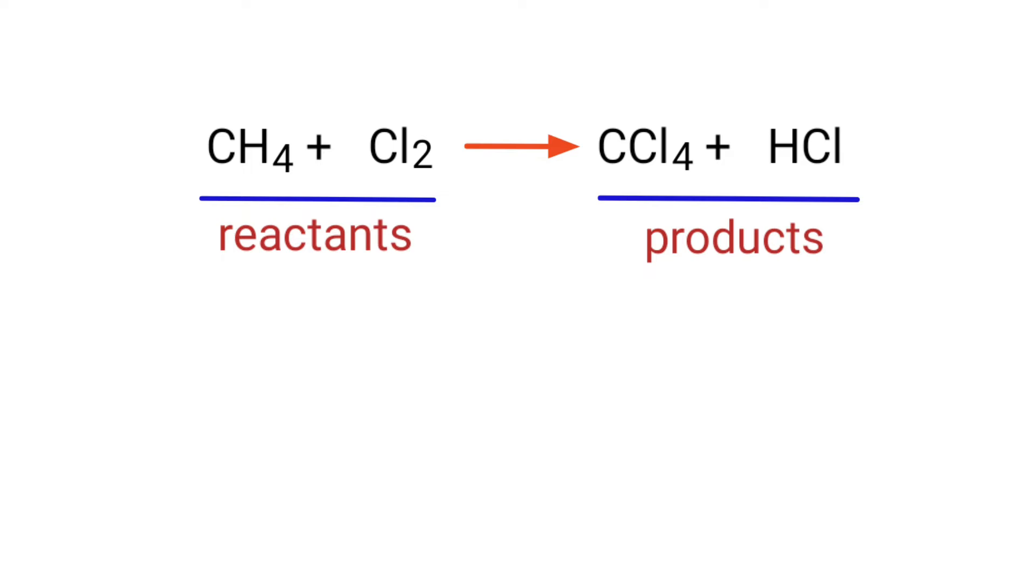In this equation, the reactants are methane and chlorine, and the products are carbon tetrachloride and hydrogen chloride.